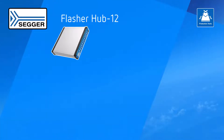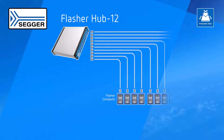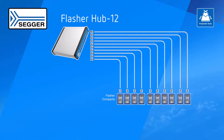The SEGGER Flasher Hub 12 is a gang programming solution for ultra-fast parallel programming. Up to 12 Flasher Compact modules can be directly connected to each Flasher Hub 12.